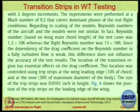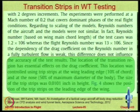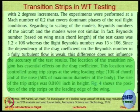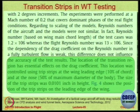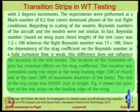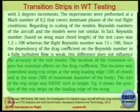From a paper — one of the authors, M.A. Vaziri, was my PhD colleague. The key statement is: the location of the transition region has essential effects on the drag coefficient. This location was controlled using trip strips at the wing leading edge and at the nose. The lesson is: when you do wind tunnel testing and want to simulate real-life conditions, you must create transition at the place where you expect transition in the actual aerodynamic body; otherwise the results will not match.